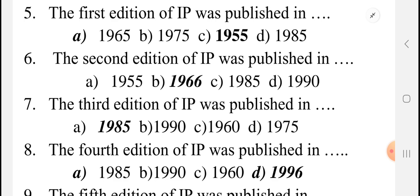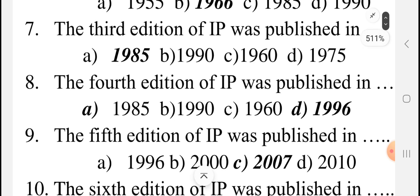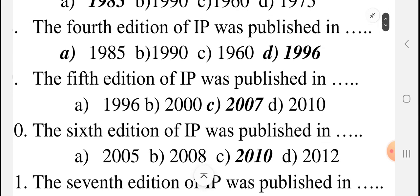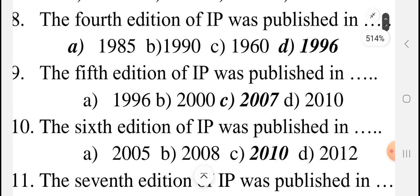The third edition of the IP was published in 1985. The fourth edition was published in 1996. So to summarize: first edition 1955, second edition 1966, third edition 1985, fourth edition 1996.